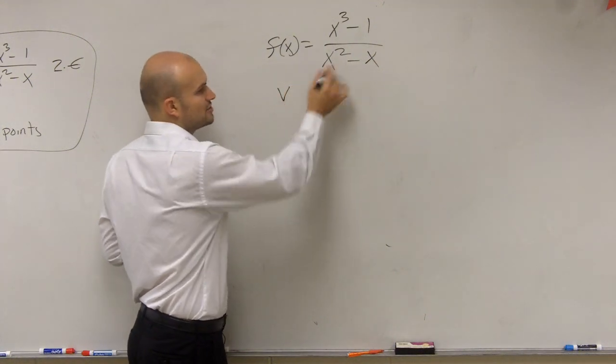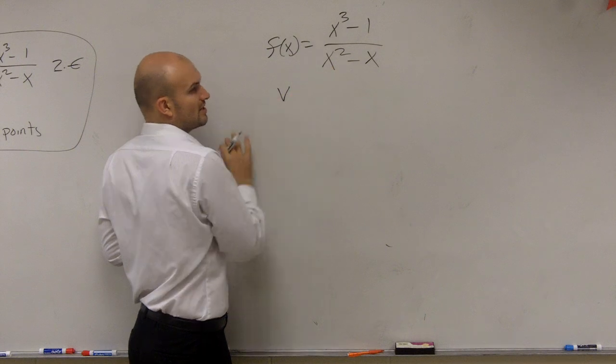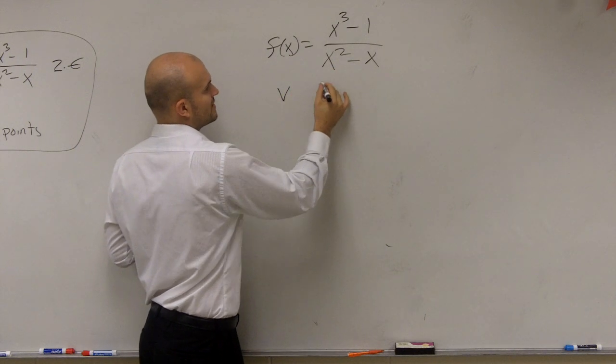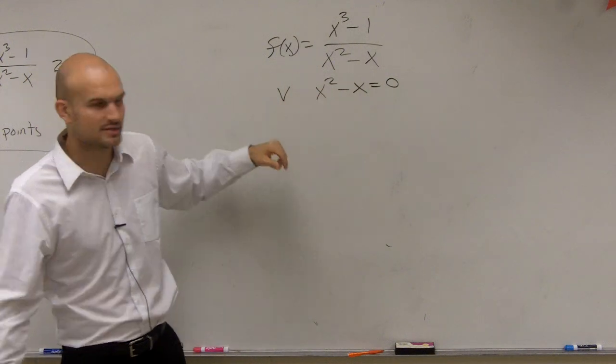So remember, vertical is going to determine what is going to make our denominator zero. So we set our denominator then equal to zero, because we want to find the values that make it equal to zero.